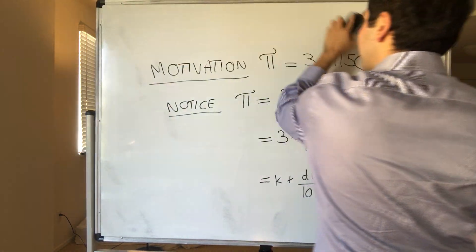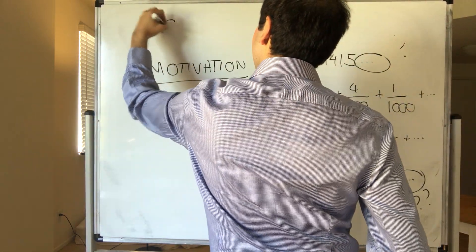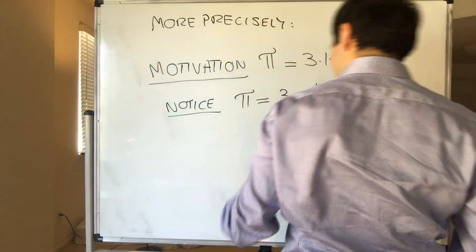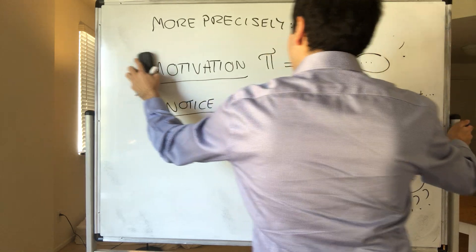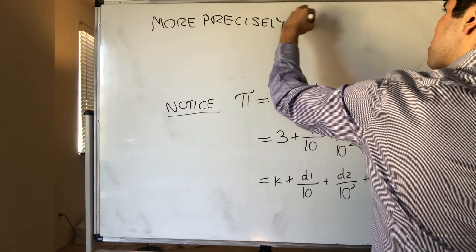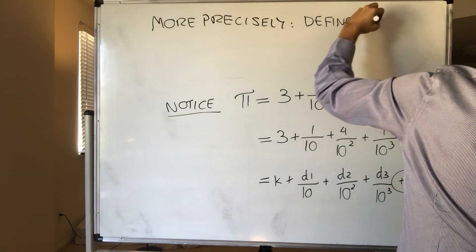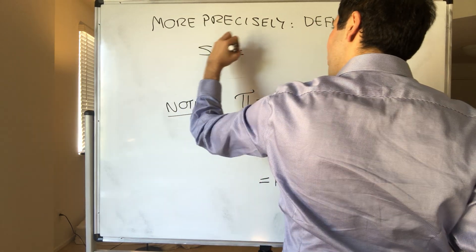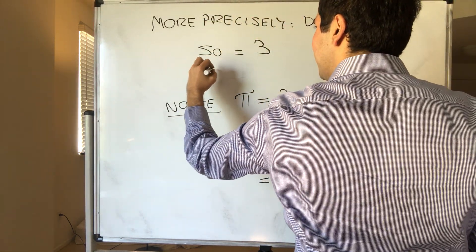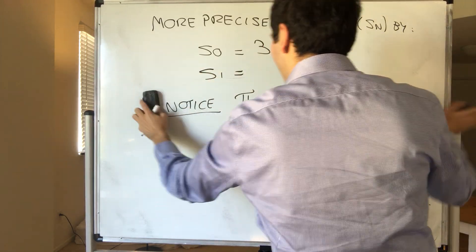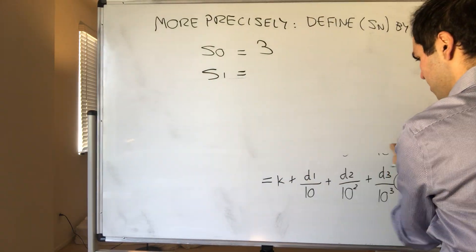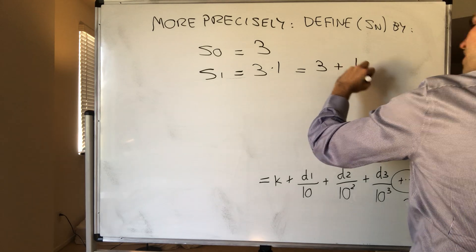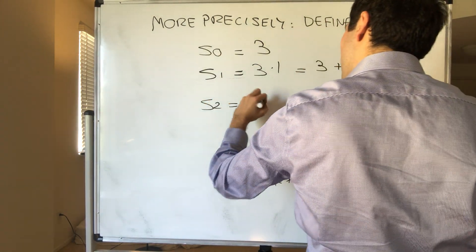So more precisely, we have defined the following sequence. Define Sn by: the first term is just 3, so S0 is 3, which is k. And then S1 is 3.1, which is 3 plus 1 tenth. S2 is 3.14, so 3 plus 1 tenth plus 4 over 10 squared.